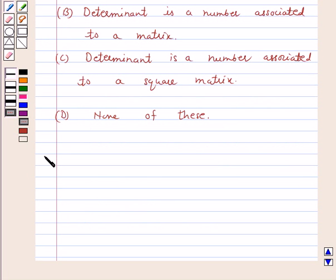Let's write the solution. Determinant is a function from the set of square matrix to the set of real numbers. This implies determinant is a number associated to a square matrix. So the answer for the above question is C.